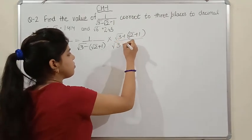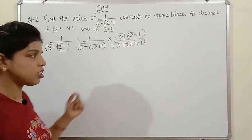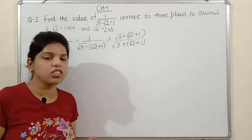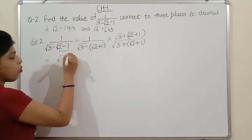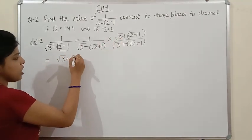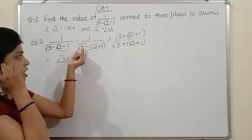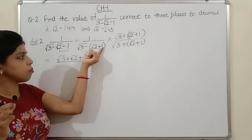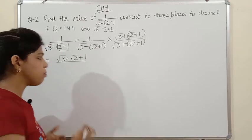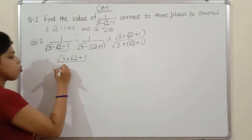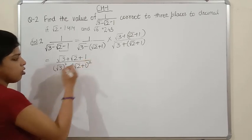So the numerator becomes (√3 + √2 + 1) and the denominator becomes (√3)² - (√2+1)². Now (√3)² = 3, and (√2+1)² expands using the identity (a+b)² = a² + b² + 2ab, giving 2 + 1 + 2√2 = 3 + 2√2. So the denominator is 3 - (3 + 2√2).